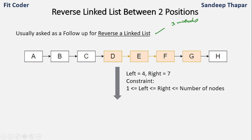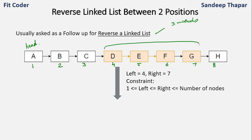In this question we are given a linked list where A is the head, and we are given two integers left and right. Using one-based indexing, left is 4 and right is 7. This means we are talking about a specific part of the linked list, and we have to reverse that part and provide the output.